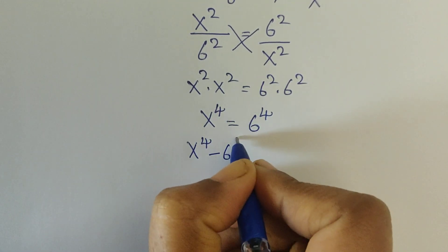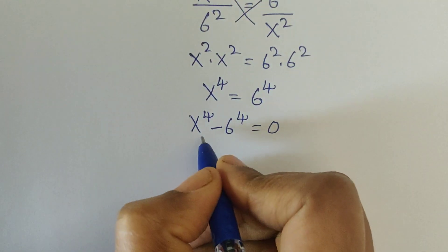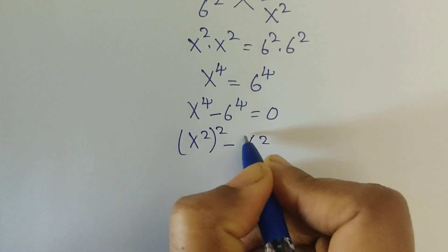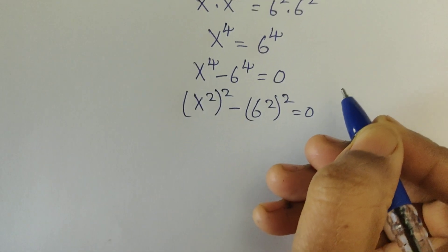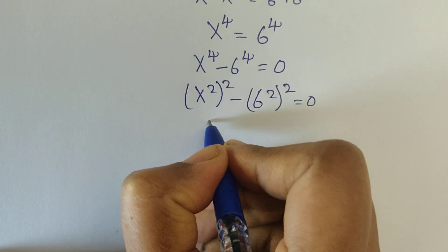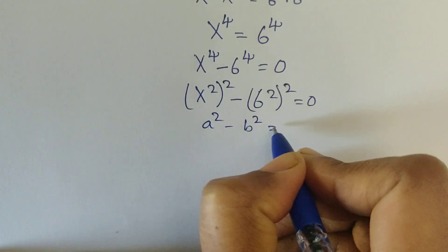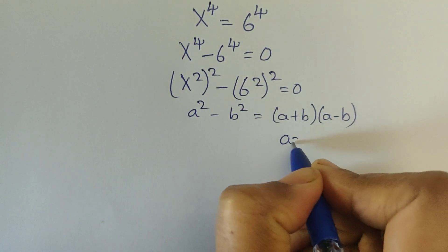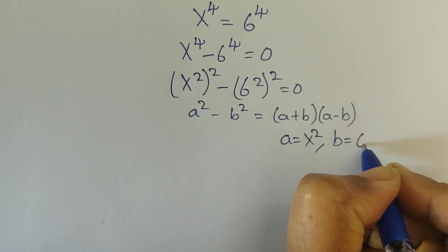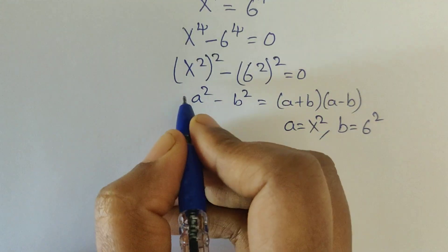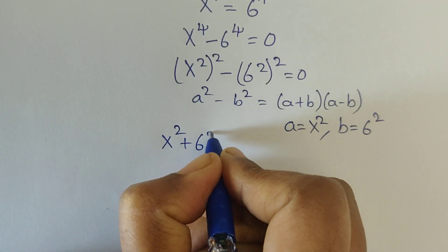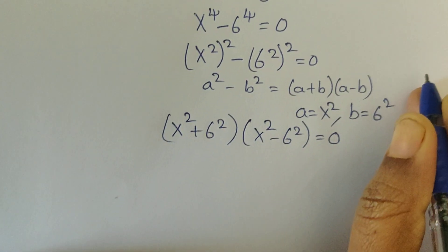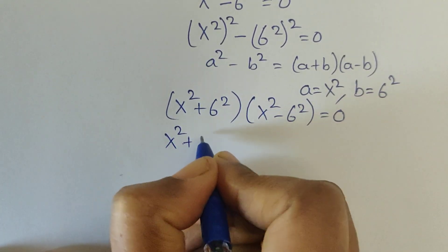Now we can write this as x squared whole squared minus 6 squared whole squared equals 0. This is in the form of a squared minus b squared. We know the formula: a squared minus b squared equals a plus b times a minus b. Here a equals x squared and b equals 6 squared. So using this formula we can write: x squared plus 6 squared times x squared minus 6 squared equals 0.